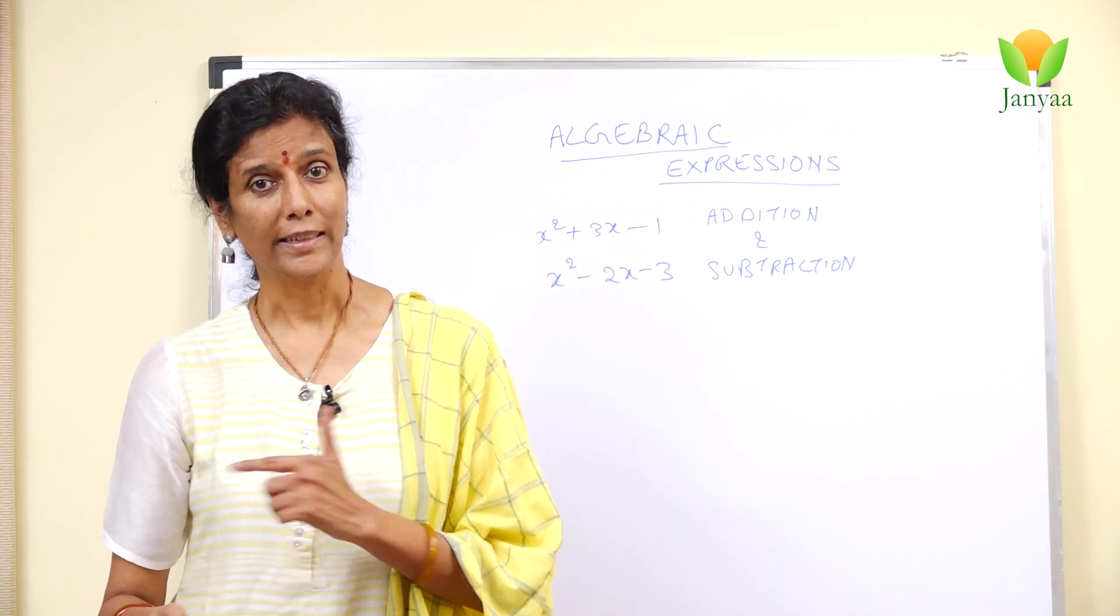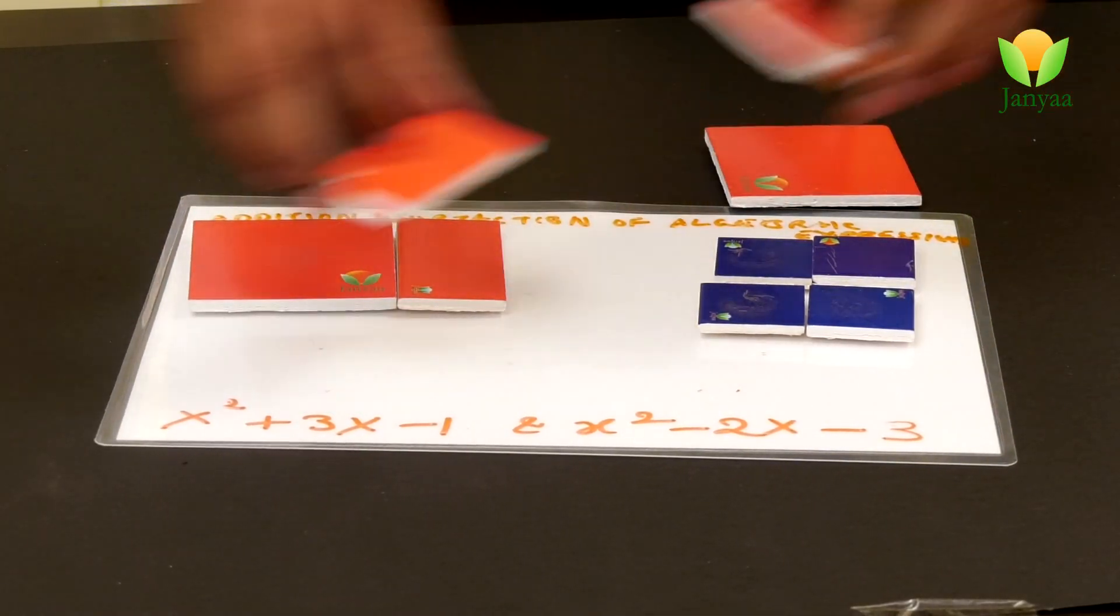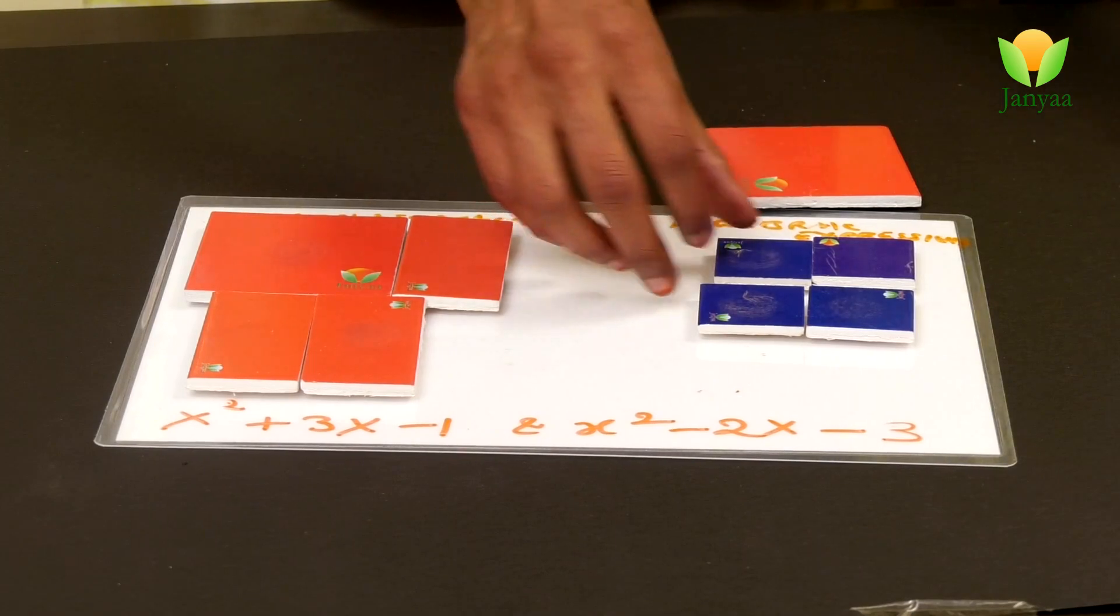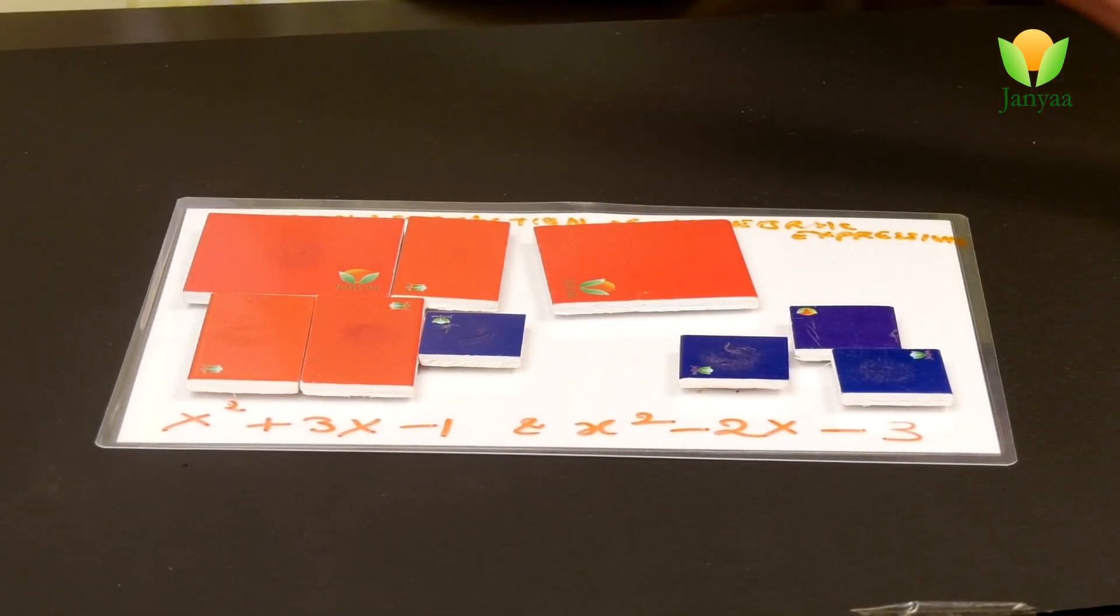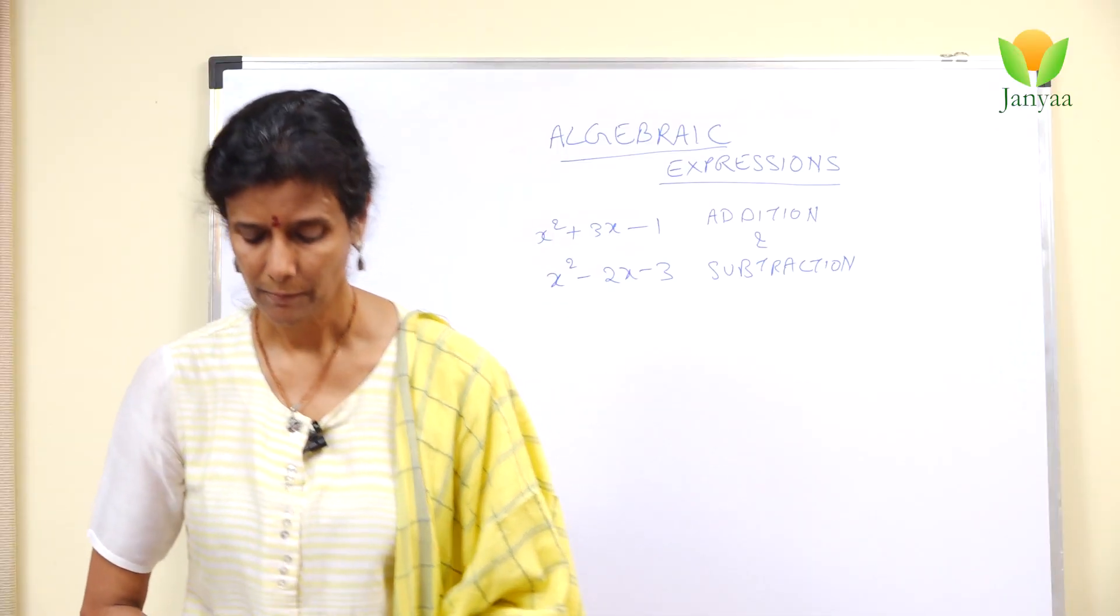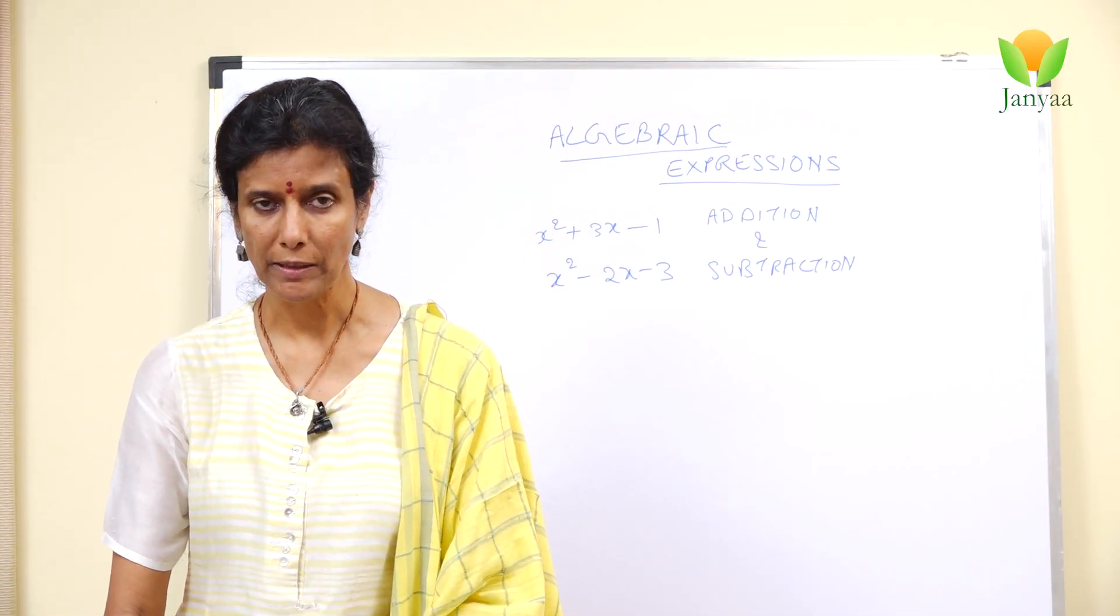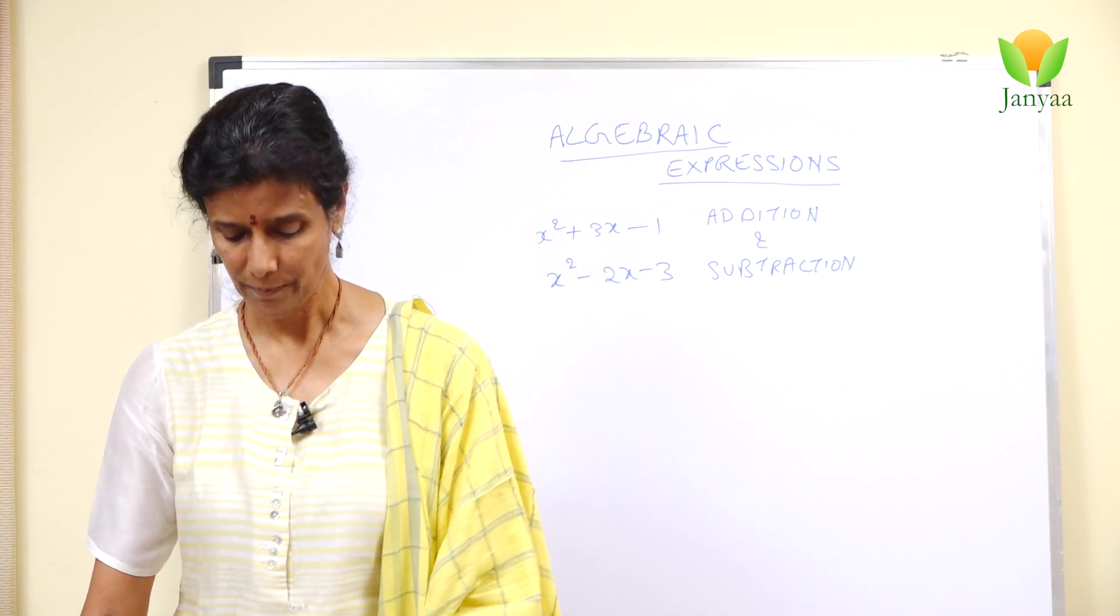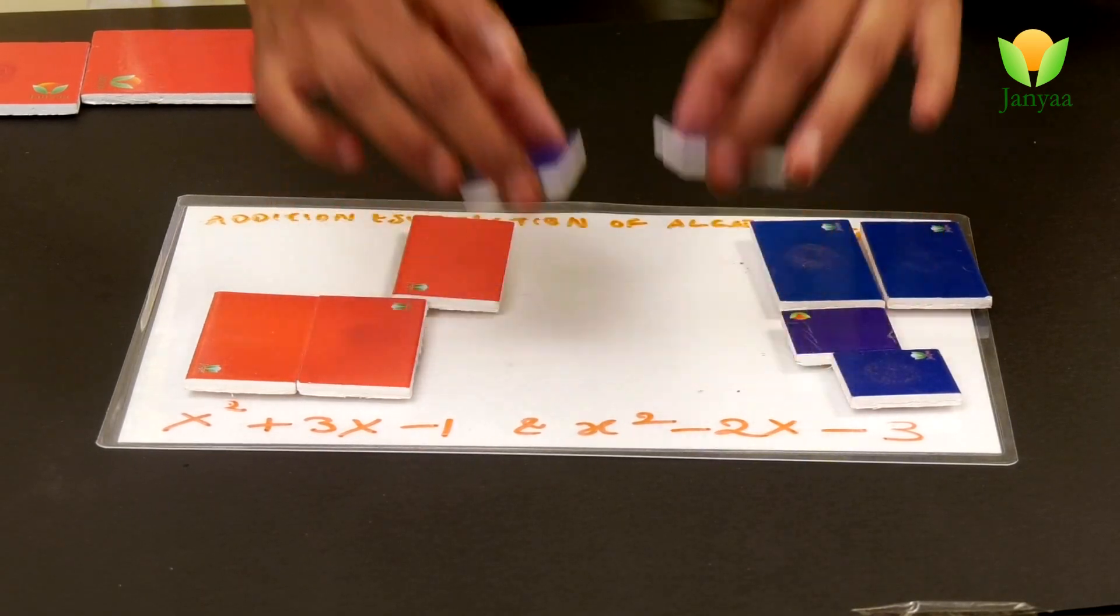Now let us subtract one equation from the other. x squared plus 3x minus 1, and let's put them back together. x squared minus 2x minus 3. So when you are subtracting, you have to remove similar tiles. I'll take these two out. I will take these two out.